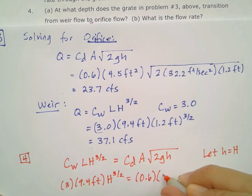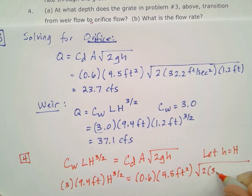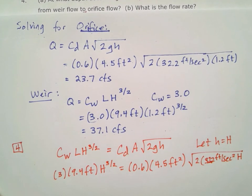Setting that equal to the discharge coefficient for the orifice, the 0.6 default value, times the area of that orifice, 4.5 ft², times the square root of 2 times 32.2 ft/s² times H. We'll substitute capital H into this equation so we have the same variable on both sides.